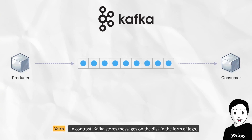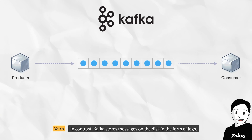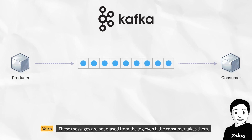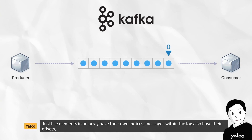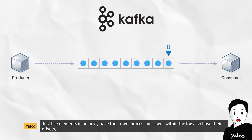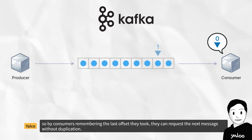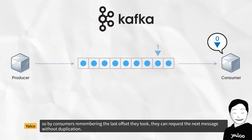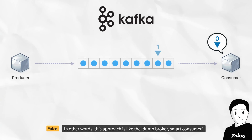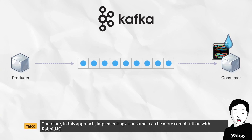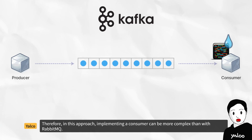In contrast, Kafka stores messages on disk in the form of logs. These messages are not erased from the log even if the consumer takes them. Just like elements in an array have their own indices, messages within the log also have their offsets. So by consumers remembering the last offset they took, they can request the next message without duplication. This approach is like the dumb broker, smart consumer. Therefore, implementing a consumer can be more complex than with RabbitMQ.